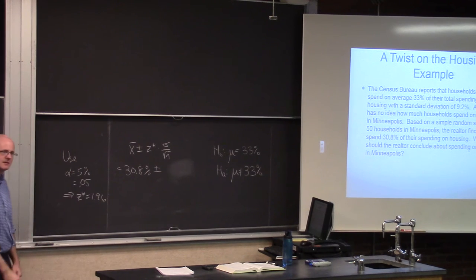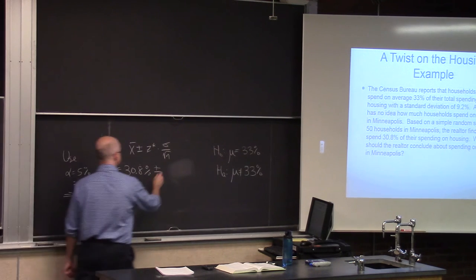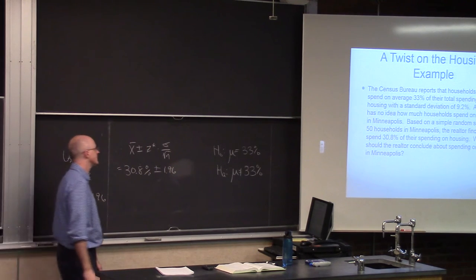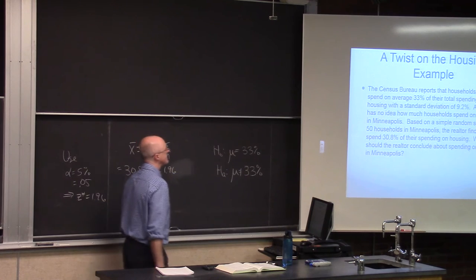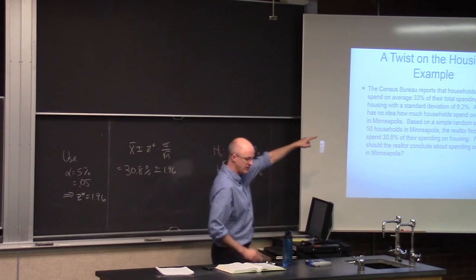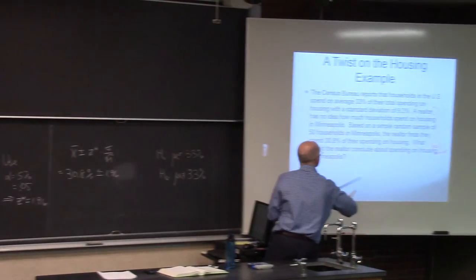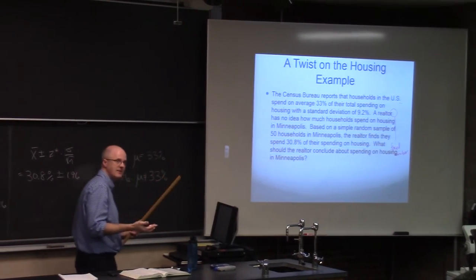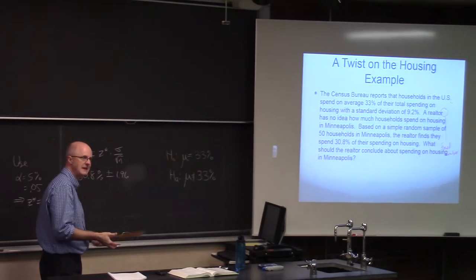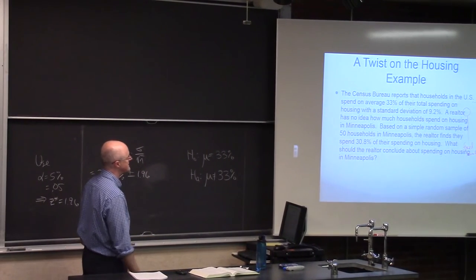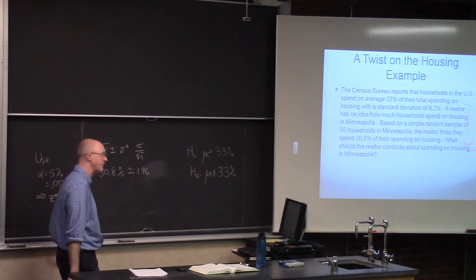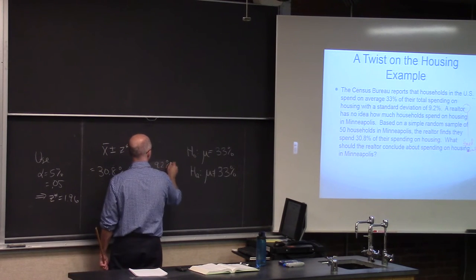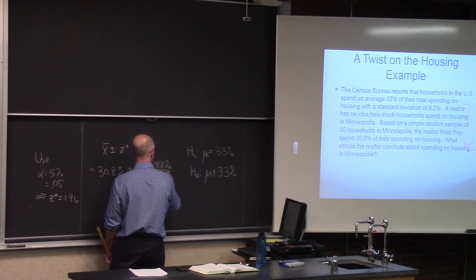Plug that in for z-star, 1.96. Don't attach a percent to that. That doesn't have any units. Sigma, that's 9.2% up there. 9.2%. We're going ahead and pretending that's right. It's the population standard deviation we're pretending. And we're going to go ahead and pretend it's the population standard deviation just for households in Minneapolis. What's the sample size? It's 50.